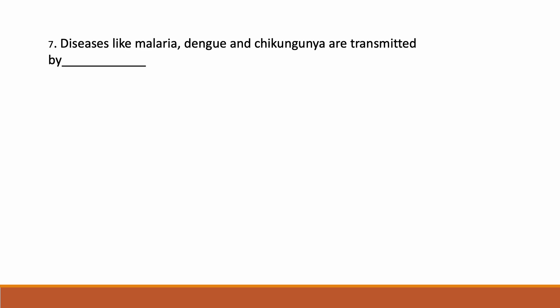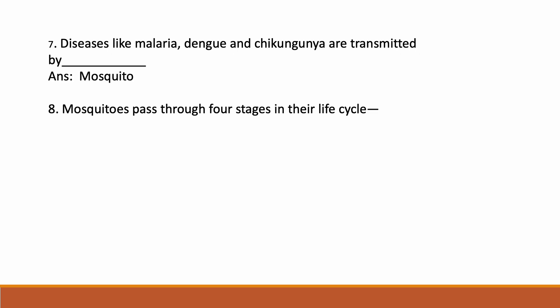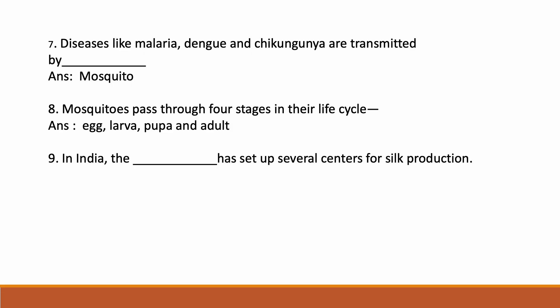Diseases like malaria, dengue, and chikungunya are transmitted by mosquitoes. Mosquitoes pass through four stages in their life cycle: egg, larvae, pupa, and adult. In India, the Khadi and Village Industries Commission (KVIC) has set up several centres for silk production.